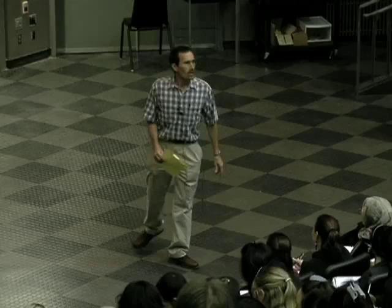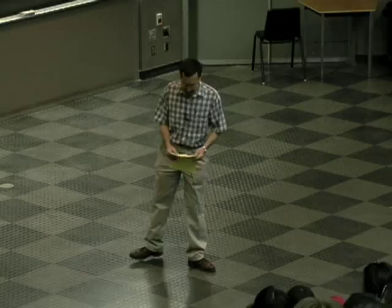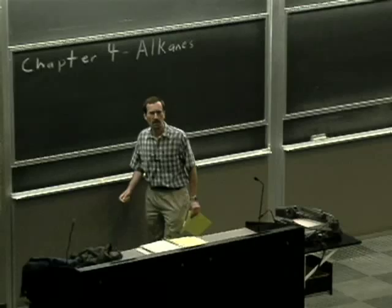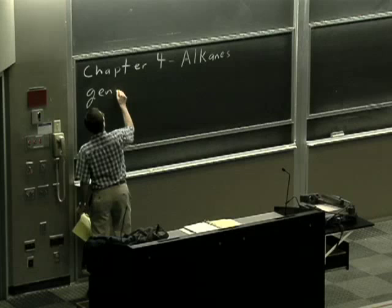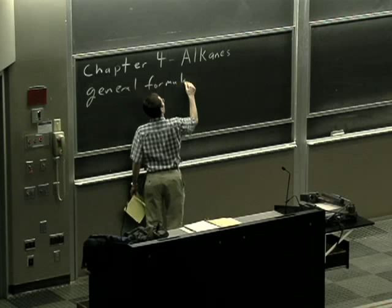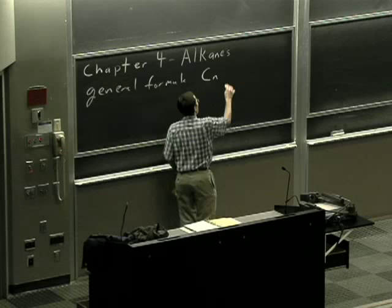All right. Well, let's begin what will be four lectures on the chapter on alkanes. So alkanes are saturated hydrocarbons. They have a general formula of CnH2n+2, N being an integral number of carbons, H2N plus 2.